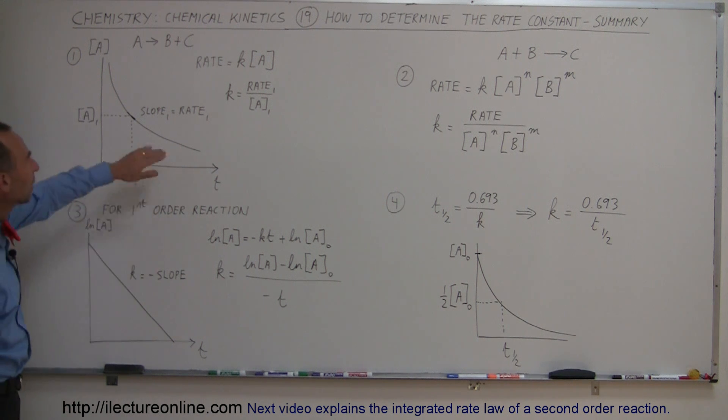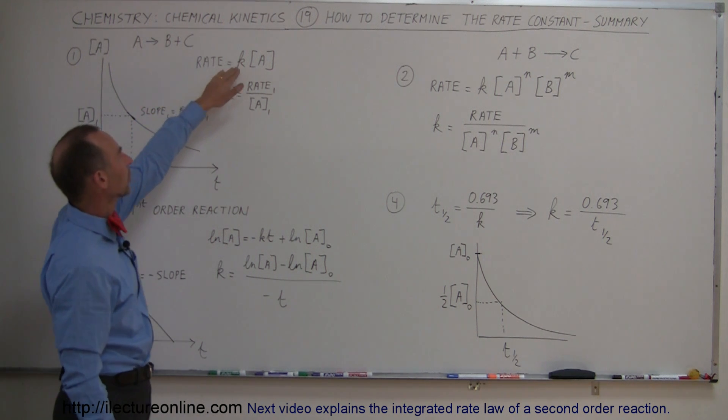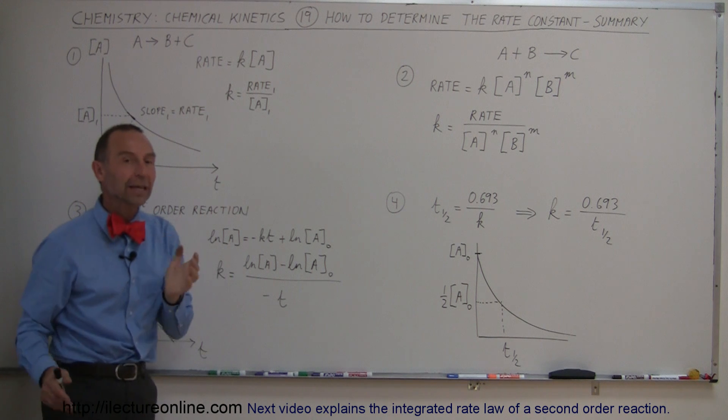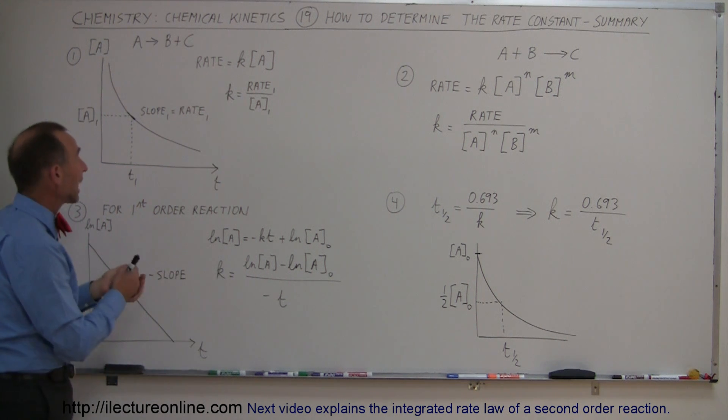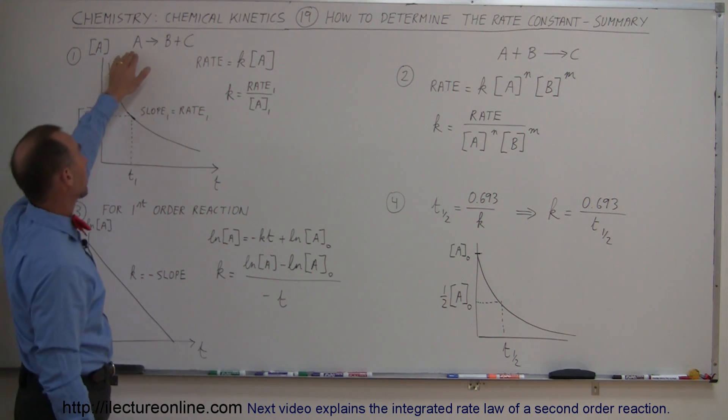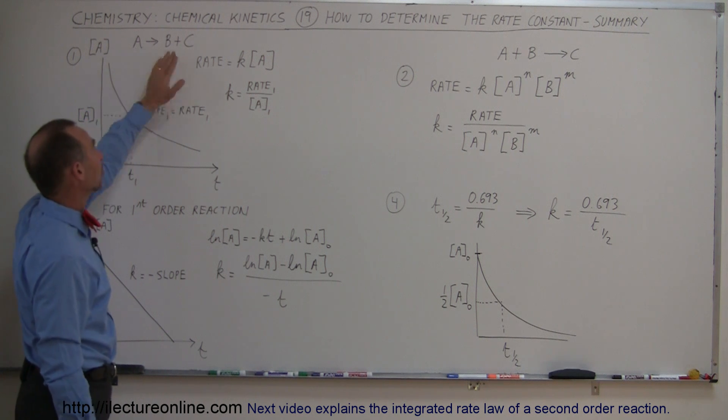First of all, we had the rate law that tells us that the rate is equal to the constant times the concentration of A. Now this is in a first order reaction where we have like a decomposition reaction where A then turns into B plus C.